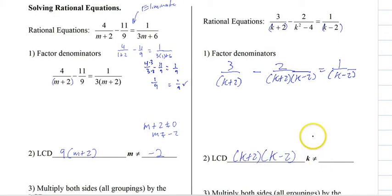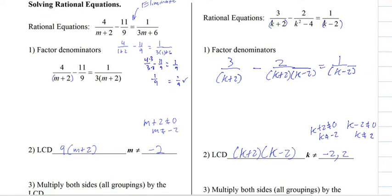And then now we need to find out what k cannot equal. So if we take each of those factors, set them not equal to 0, it tells us that k cannot equal negative 2 or 2. So as long as we don't get a negative 2 or a 2, we're good.